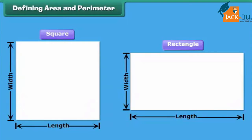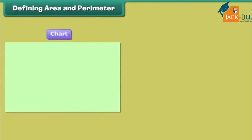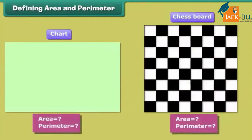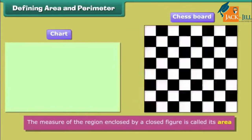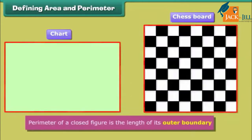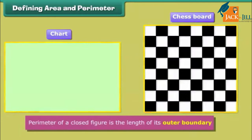Friends, we already know about closed figures like squares and rectangles. For example, this chart paper is a rectangular chart, while the chessboard is a square. The measure of the region enclosed by a closed figure is called its area. Perimeter of a closed figure is the length of its outer boundary. Let us now find the ways of calculating area and perimeter of rectangles and squares.